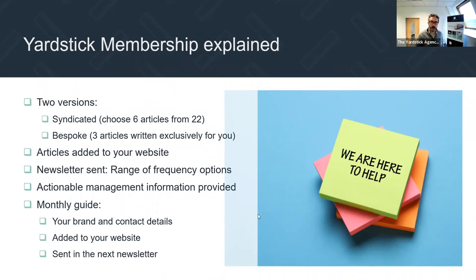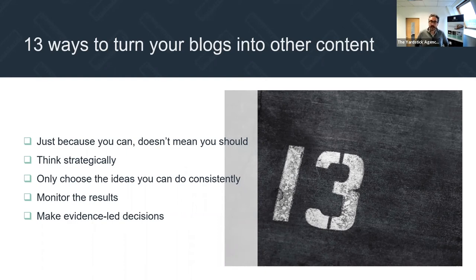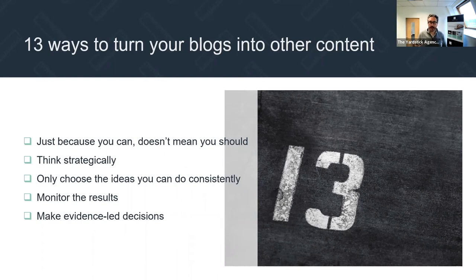So, 13 ways you can turn your blogs into other content. A few things to get out of the way up front: just because you can doesn't mean you should — think strategically. Don't try to dive in and do all 13 at the same time. Pick two or three ideas you can do consistently, and do them on a regular basis. The superpower of great marketers is consistency — just doing it time after time, not getting distracted by shiny new things. Monitor results: newsletter engagement, Google Analytics, and social engagement.